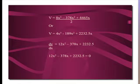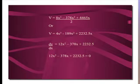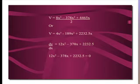Let's clean that equation up with a little algebra. Volume equals 4x³ minus 189x² plus 2232.5x. Now we can do the derivative. The derivative is 12x² minus 378x plus 2232.5.